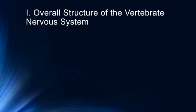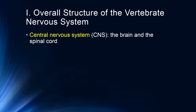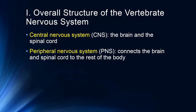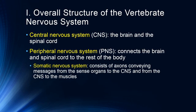The central nervous system is the brain and the spinal cord. Everything else is the peripheral nervous system in all vertebrates. The peripheral nervous system connects the brain and spinal cord to the rest of the body. The somatic nervous system consists of axons conveying messages from the sense organs to the central nervous system and from the central nervous system to the muscles. The somatic nervous system is generally thought of as the part of the body that interacts with our environment — sensory messages come in and we can direct our musculoskeletal system.